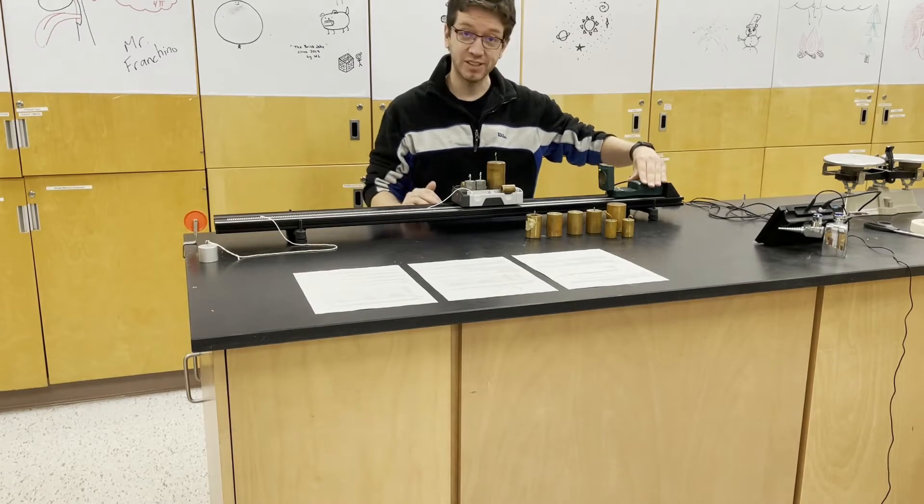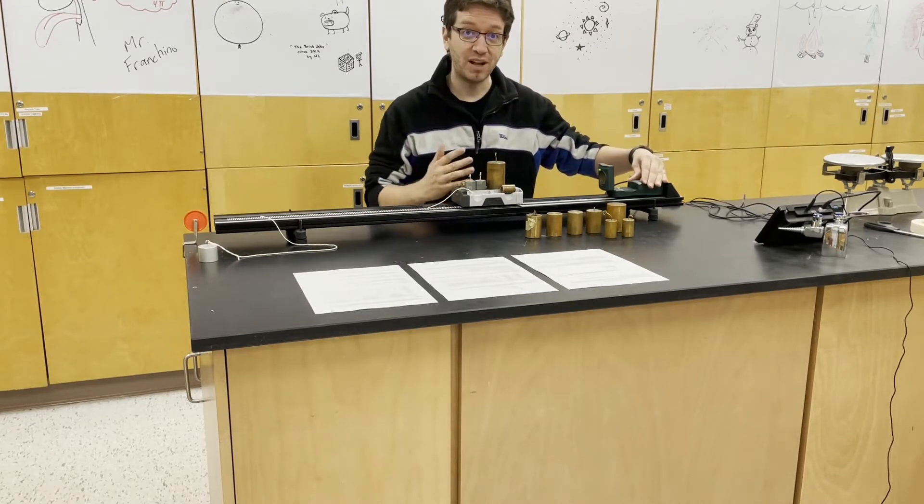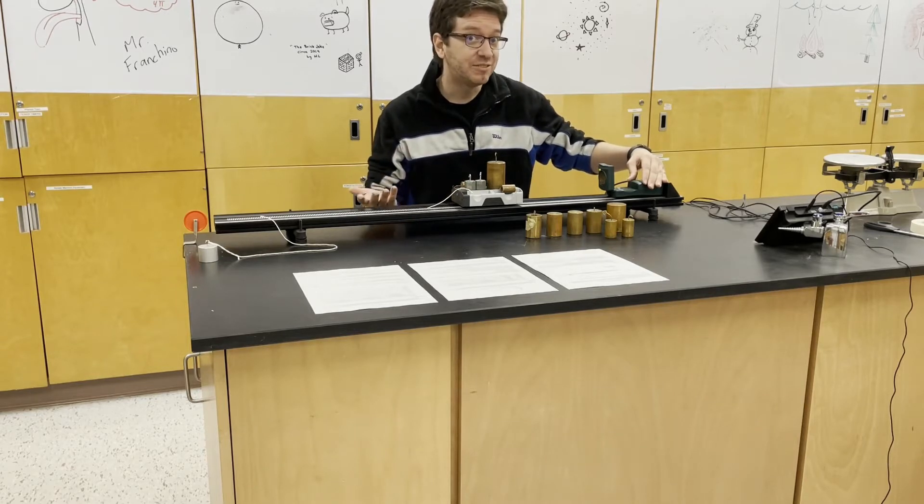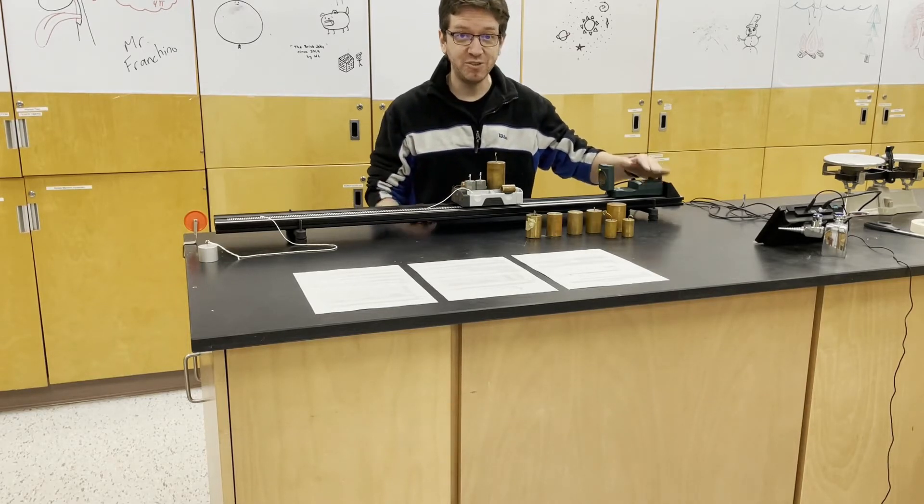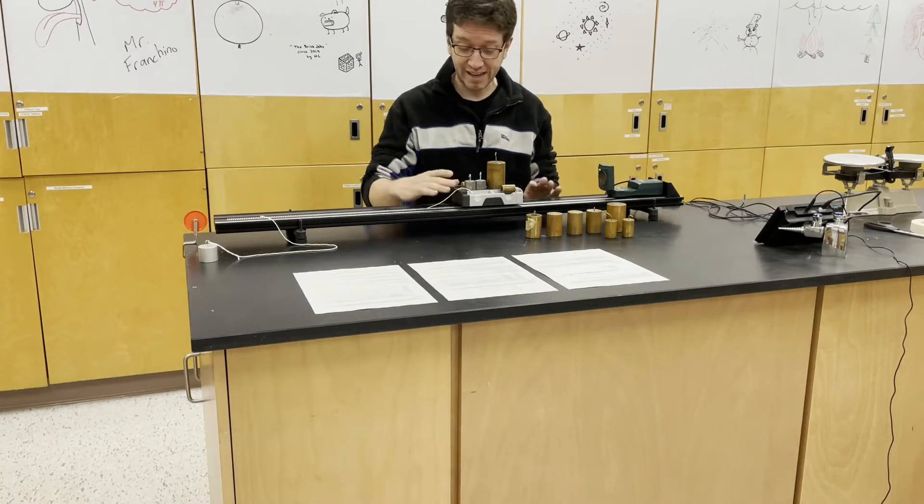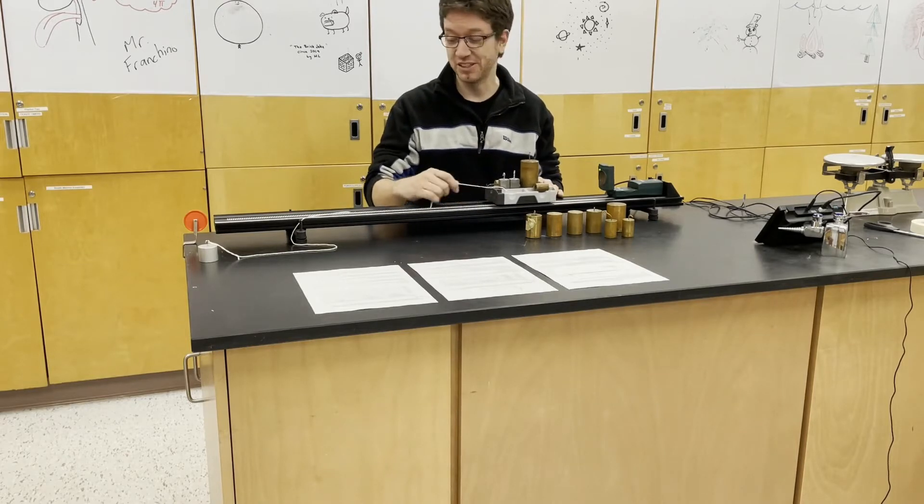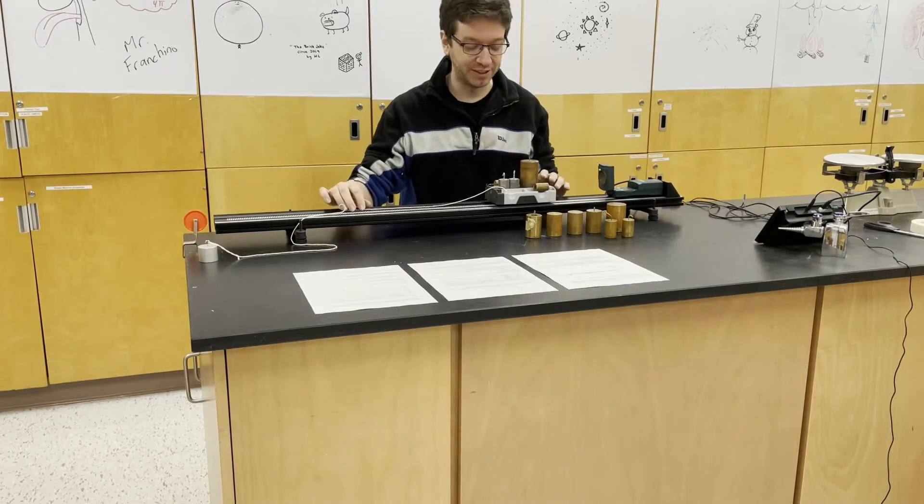This is how we're going to do that. So this is a motion sensor. It is going to measure the motion of the cart and plot DT and VT graphs. From the slope of the VT graph, we can get acceleration. Then what I have is this track, which is fairly frictionless. We want to try and reduce friction as much as possible because we're not going to be considering it in this experiment.